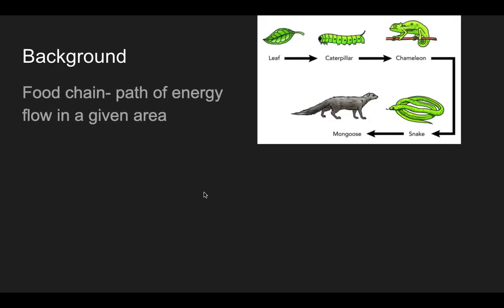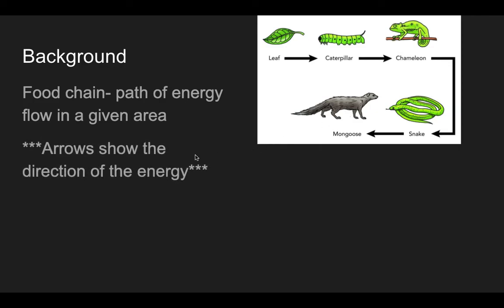We know that a food chain is a path of energy that flows in a given area. In this food chain, we go from leaf to caterpillar to chameleon to snake to mongoose. The arrows show the direction of the energy. So the leaf's energy is going to the caterpillar, the caterpillar's to the chameleon, the chameleon's to the snake, and the snake's to the mongoose. Only about 10% of that energy will go from one organism to the next, so by the time the mongoose gets the energy, he gets very little of the amount originally given by the sun.